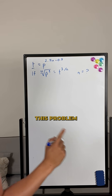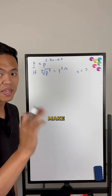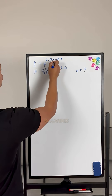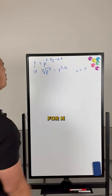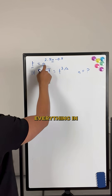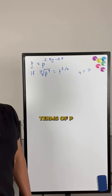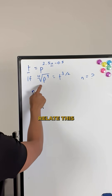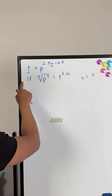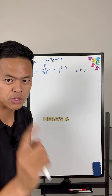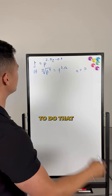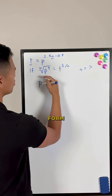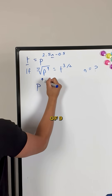The easiest way to do this problem is to make everything the same base. We're solving for n, and the strategy is to keep everything in terms of p. That means we need to relate the second equation and substitute it into the first one. All we need to do is rewrite it in exponential form.